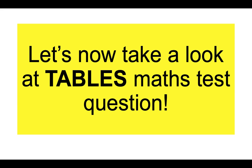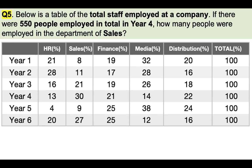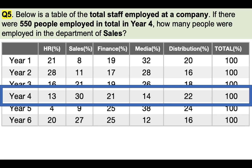Let's now take a look at a tables maths test question. Question number five. Below is a table of the total staff employed at a company. If there were 550 people employed in total in year four, how many people were employed in the Department of Sales? We can see that in the different years we have the percentage of staff employed in each area — HR, sales, finance, media, distribution — and the total on the right-hand side. When we first look at this table it looks quite confusing, however we only need a couple of elements to answer this question: the total for year four and the percentage of sales employees, which is 30.